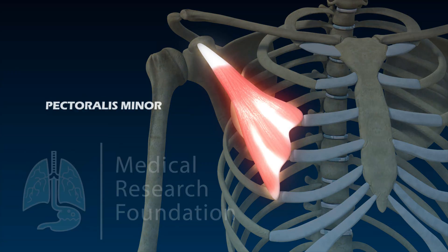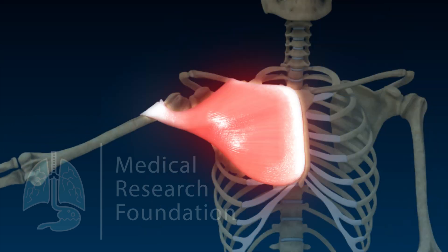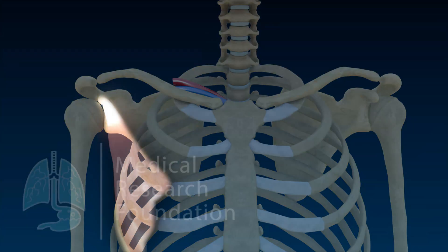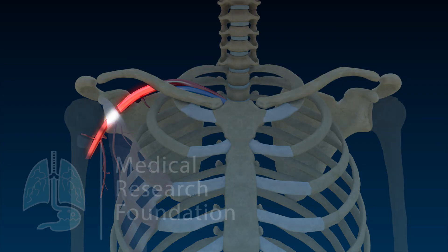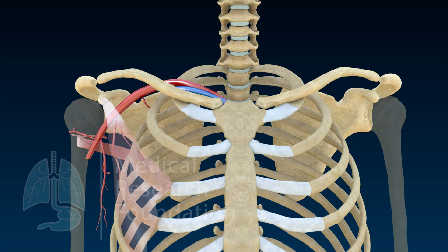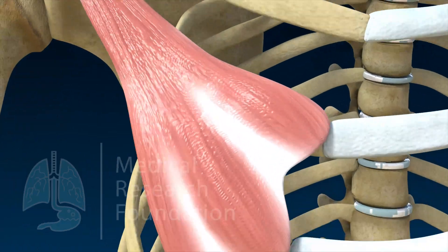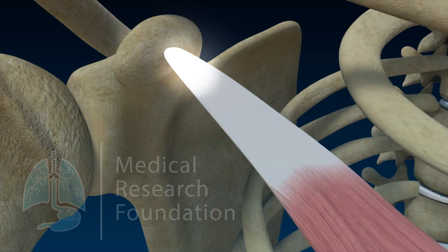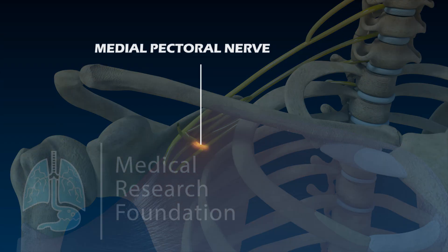Pectoralis minor is a thin, flat, and triangular muscle situated beneath pectoralis major. It is a key muscle in the pectoral region because it crosses the axillary artery and divides it into three parts. It originates from the third to fifth ribs near the costal cartilages. Insertion takes place at the medial border and superior surface of the coracoid process of the scapula. It is supplied by the medial pectoral nerve.